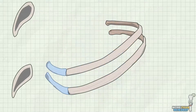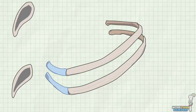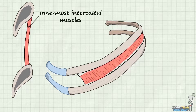Between each of the ribs are regions known as the intercostal spaces. The intercostal spaces contain three layers of intercostal muscles, the intercostal nerves, and the intercostal arteries and veins. The muscles of the intercostal space are helpfully named the external intercostal muscles, internal intercostal muscles, and innermost intercostal muscles in order of depth. The deepest layer is the innermost intercostal muscles, whose fibres travel obliquely from anterior to posterior. These are the least distinctive muscular layer and are best demonstrated in the lateral chest wall.